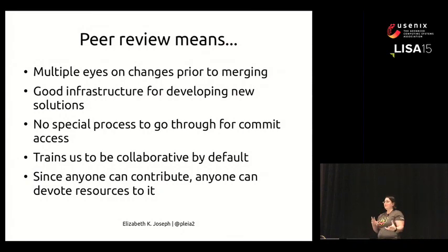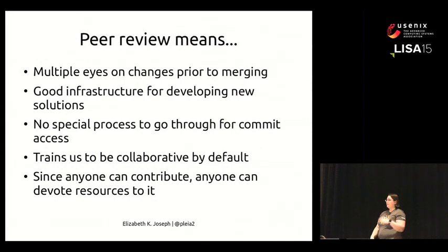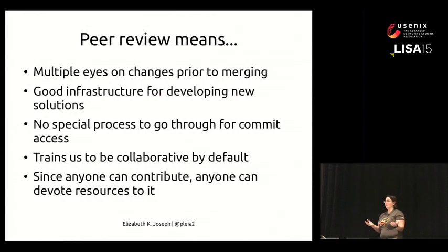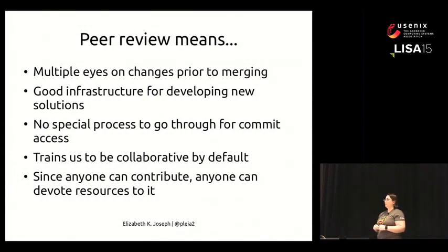Peer review using Gerrit is a huge part of making sure this infrastructure works for us. Automated tests are awesome, but peer review is even better. None of the patches that land in our infrastructure can go in without peer review. Technically you can self-approve as a core member, but you won't be a core member for very long if you do that. We have a policy that it doesn't matter who submits the code — someone off the street or a core reviewer — it requires two core reviewers to review the code. Not enforced by technical policy, but by social policy.